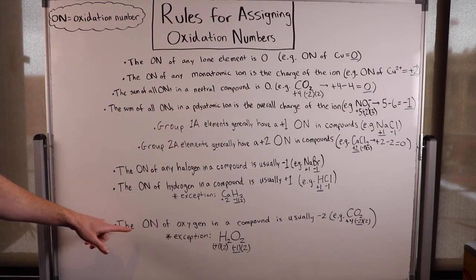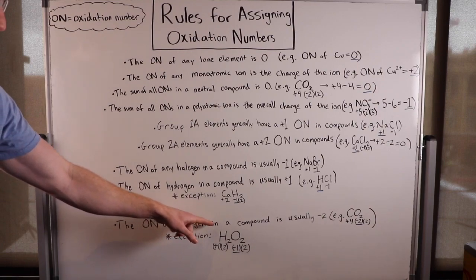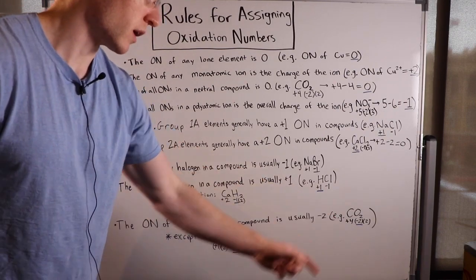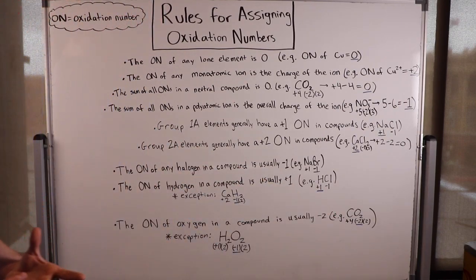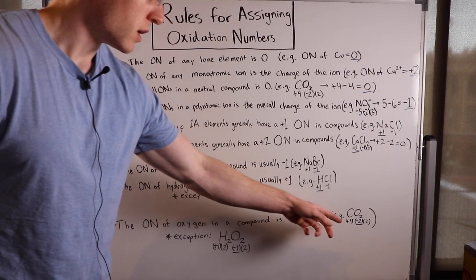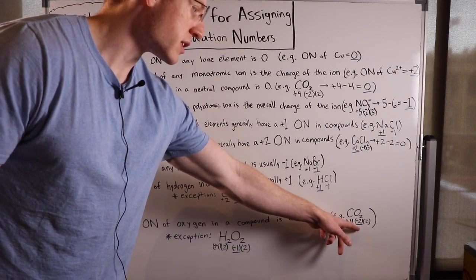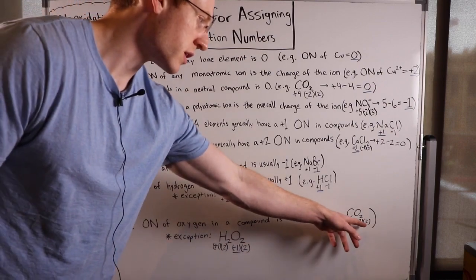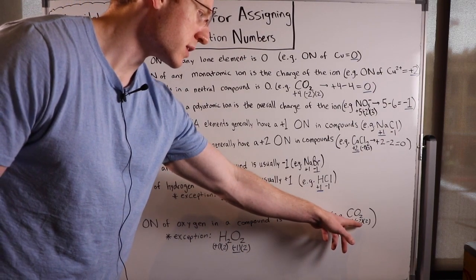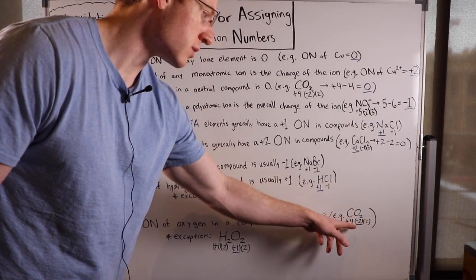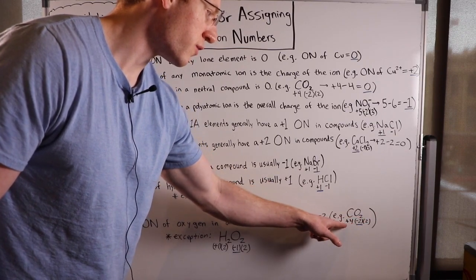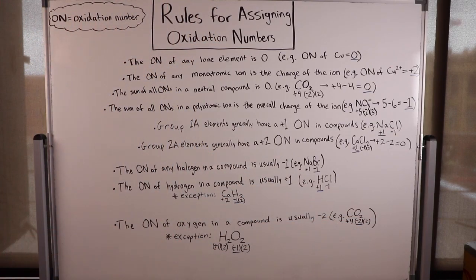Finally, the oxidation number of oxygen in a compound is usually minus two. An example here would be CO2 — carbon dioxide. The carbon will have a charge of plus four to balance out the minus two charge of oxygen, because there are two oxygens: plus four plus negative two times two, or four minus four, equals zero.